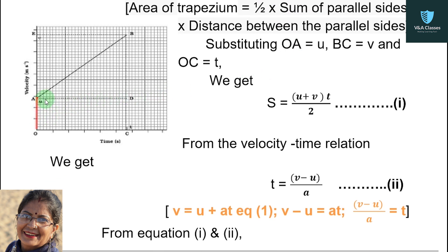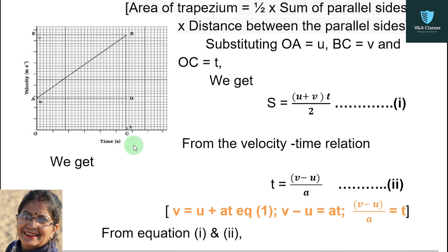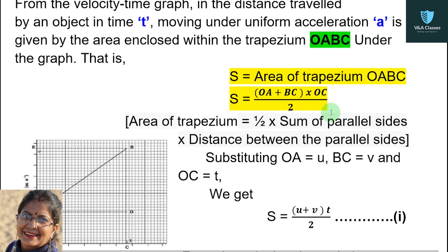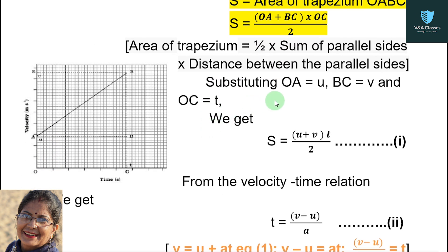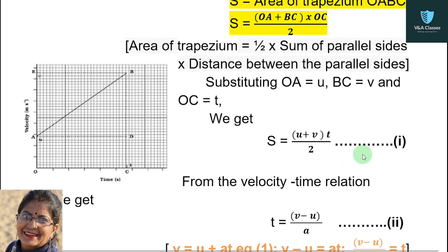The area of trapezium formula is: sum of parallel sides divided by 2, multiplied by height. So S equals (OA plus BC) multiplied by OC, divided by 2. This is equation 1. Substituting: OA equals U, BC equals V, and OC equals T. So S equals (U plus V) multiplied by T, divided by 2. This is equation 1.